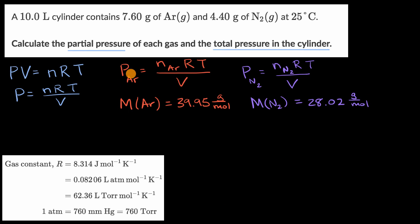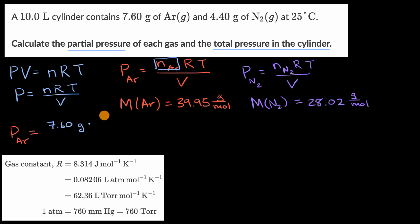Now we can apply each of these equations. The partial pressure of argon is equal to the number of moles of argon — that's 7.60 grams times one over the molar mass, so times one over 39.95 grams per mole. The grams cancel out, giving us the number of moles of argon. Then we multiply by our ideal gas constant.